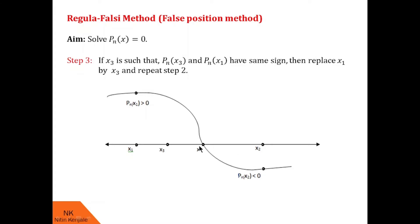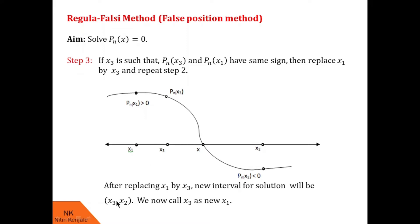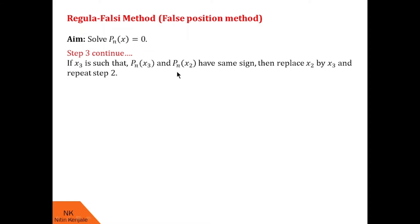Using the formula in Step 2 we have found x3. According to Step 3, if x3 is such that f(x3) and f(x1) have the same sign, then we replace x1 by x3. So our next interval of solution is [x3, x2]. We call this x3 our new x1 and repeat Step 2. It might happen that x3 falls on the other side of the curve — in that case f(x3) and f(x2) will have the same sign, so we replace x2 by x3 and repeat Step 2.